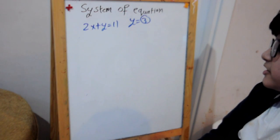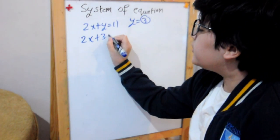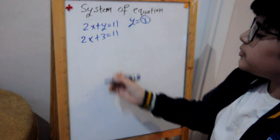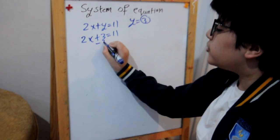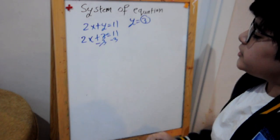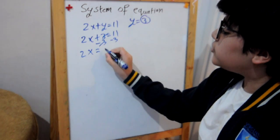Another way to solve it is 2x plus 3 equals 11. So instead of the positive, we will go down by negative. So negative 3 on both sides. This will go with this. Then it will equal to 2x equals 8.